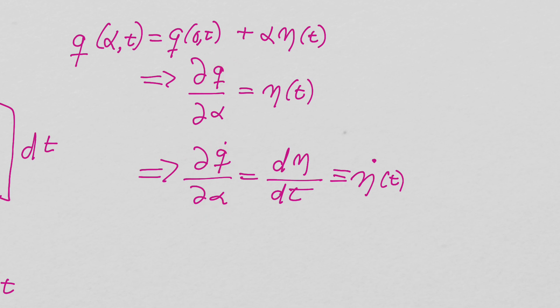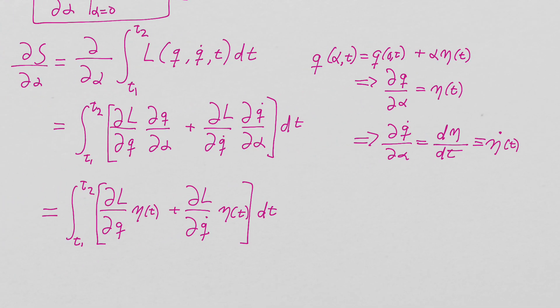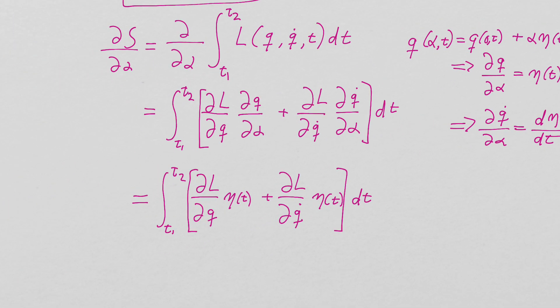So this is now how we understand eta of t is dq d alpha, and eta dot, dA to dt is dq dot d alpha. And these are the two independent variables of the Lagrangian.